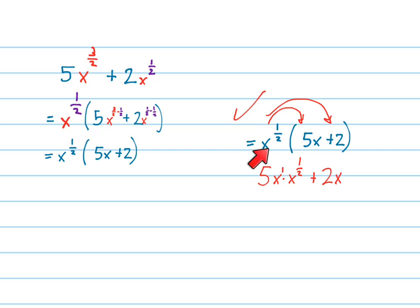Just to verify that this is working right, if I was to redistribute to get back where I was, I would see there's x to the 1 half times 5x, and there's x to the 1 half times 2, x to the 1 times x to the 1 half. We add the exponents to get x to the 3 halves. So, this is pretty good.